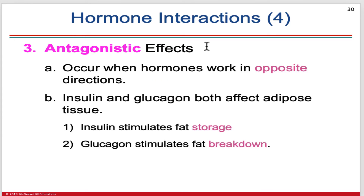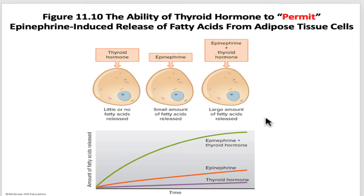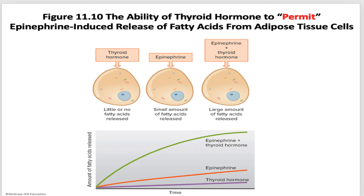The third type of effect is antagonistic, when one hormone works in the opposite direction to the other. A great example is insulin and glucagon — both affect glucose levels in the blood, but one raises them and one reduces them. Glucagon raises glucose levels and insulin reduces them. Figure 11.10 shows the example of thyroid hormone and epinephrine working in some form of cooperation, demonstrating a permissive effect where the combined result is well beyond what simple additive synergism would predict.